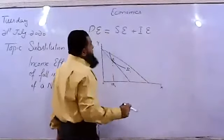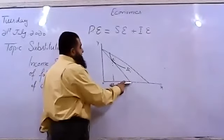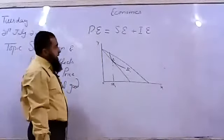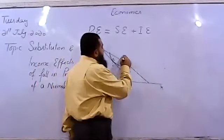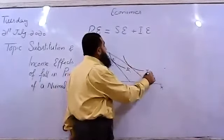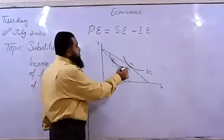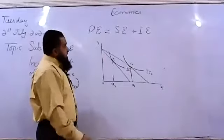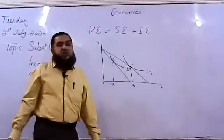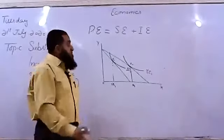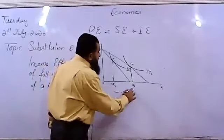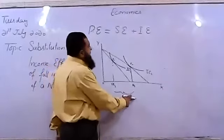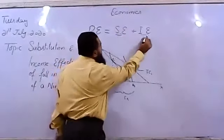More of X can now be afforded by the consumer. If he spends all income on X, previously he could buy six units, but now he can buy twelve units. The consumer moves to new indifference curve IC2, reaching a new equilibrium where he consumes eight units of X — call this X3. So the consumer moves from X1 to X3: this is the total effect, an increase of five units in consumption of commodity X due to the fall in price.